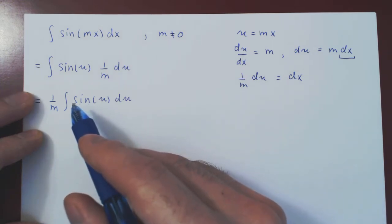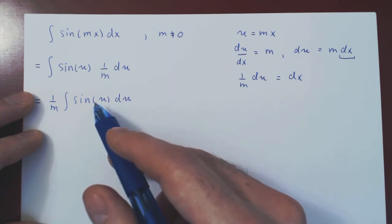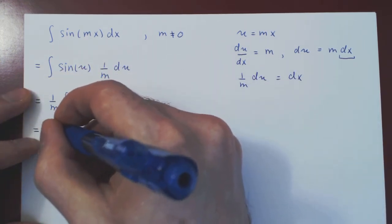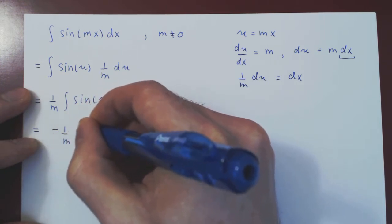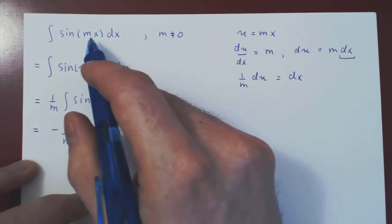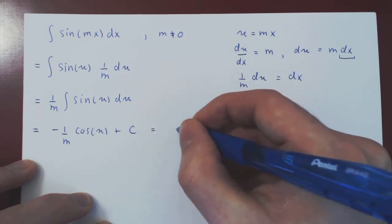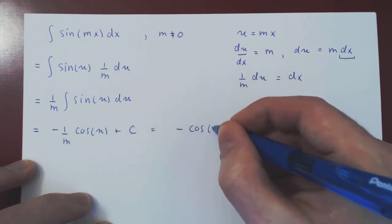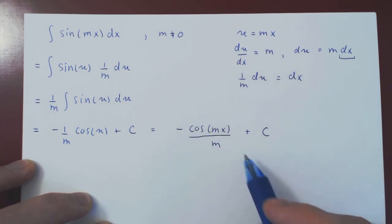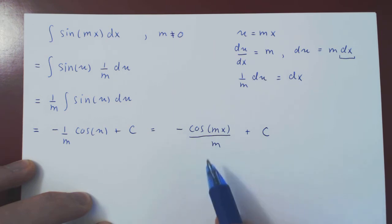We ask: what function has derivative equal to sine? The derivative of cosine is negative sine, so the derivative of negative cosine is positive sine. So the result is negative 1 over m times cosine of u plus c. Replacing u by mx, we get negative cosine of mx over m plus c. For example, the integral of sine of 7x dx would be negative cos of 7x over 7 plus c.